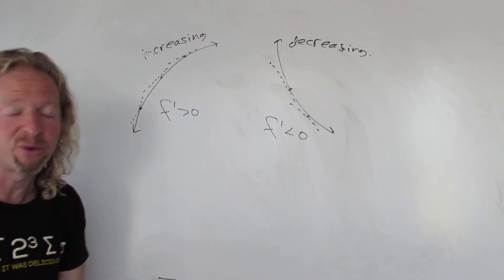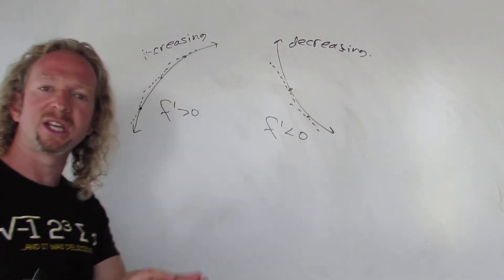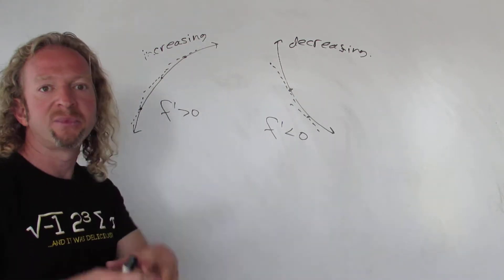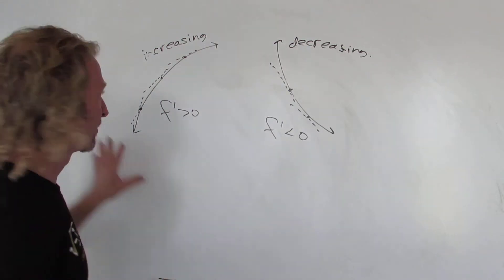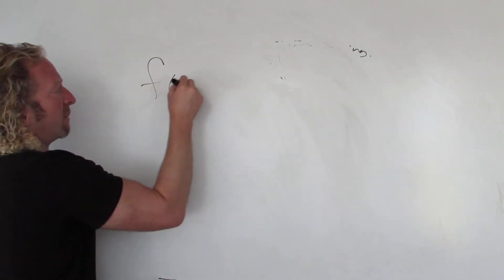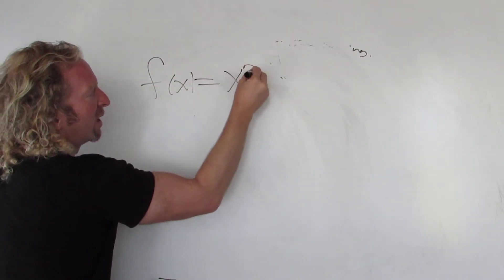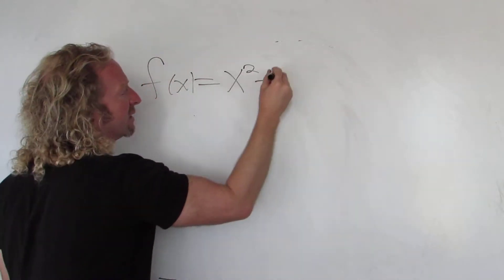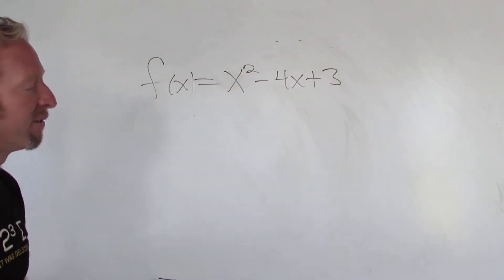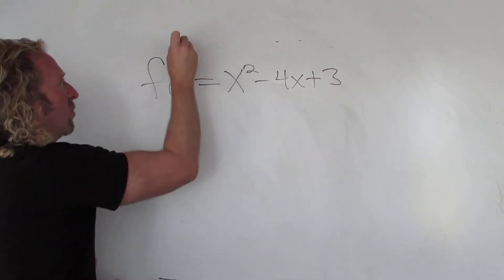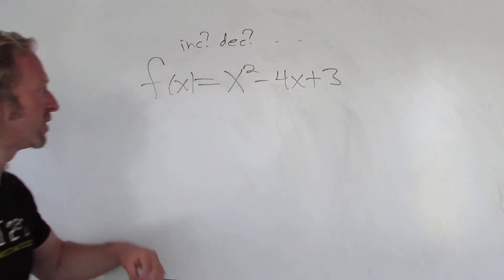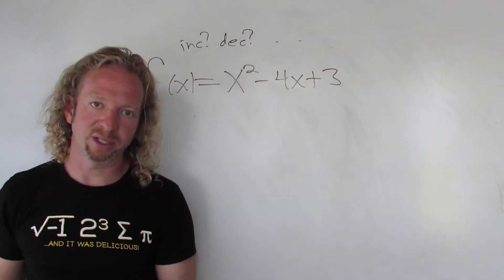Positive derivative means increasing, negative derivative means decreasing — really easy to memorize. Let's do a simple example of finding intervals where a function is increasing and/or decreasing. So let's try this one: f(x) = x² − 4x + 3. We're looking for where the function is increasing and decreasing — what intervals can we find?